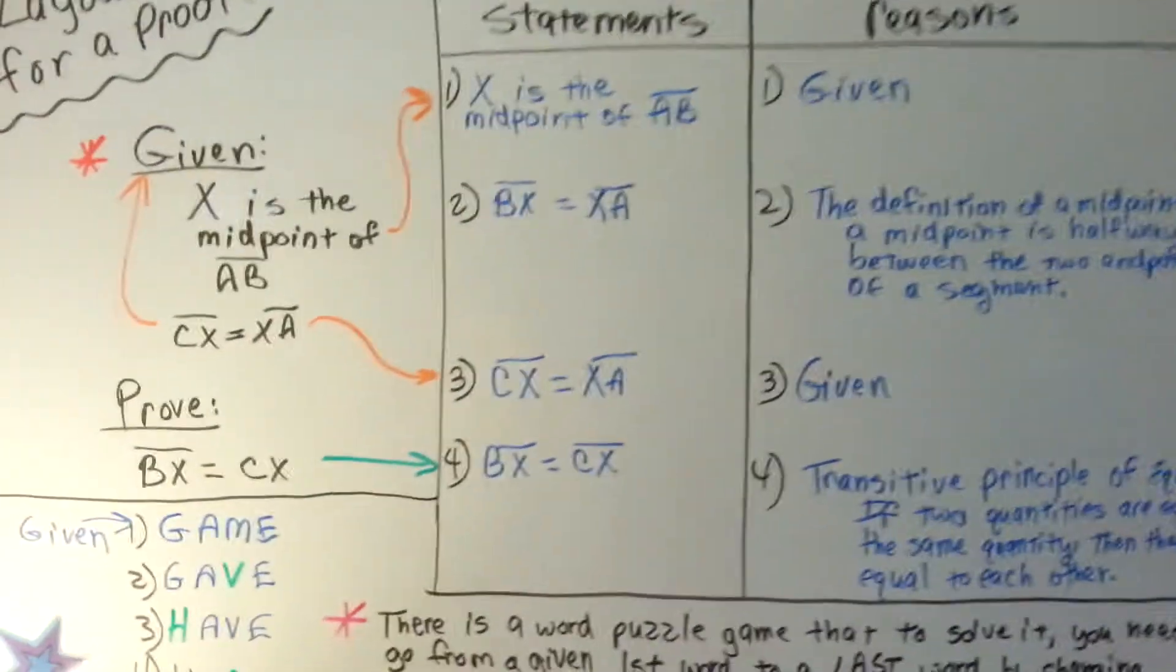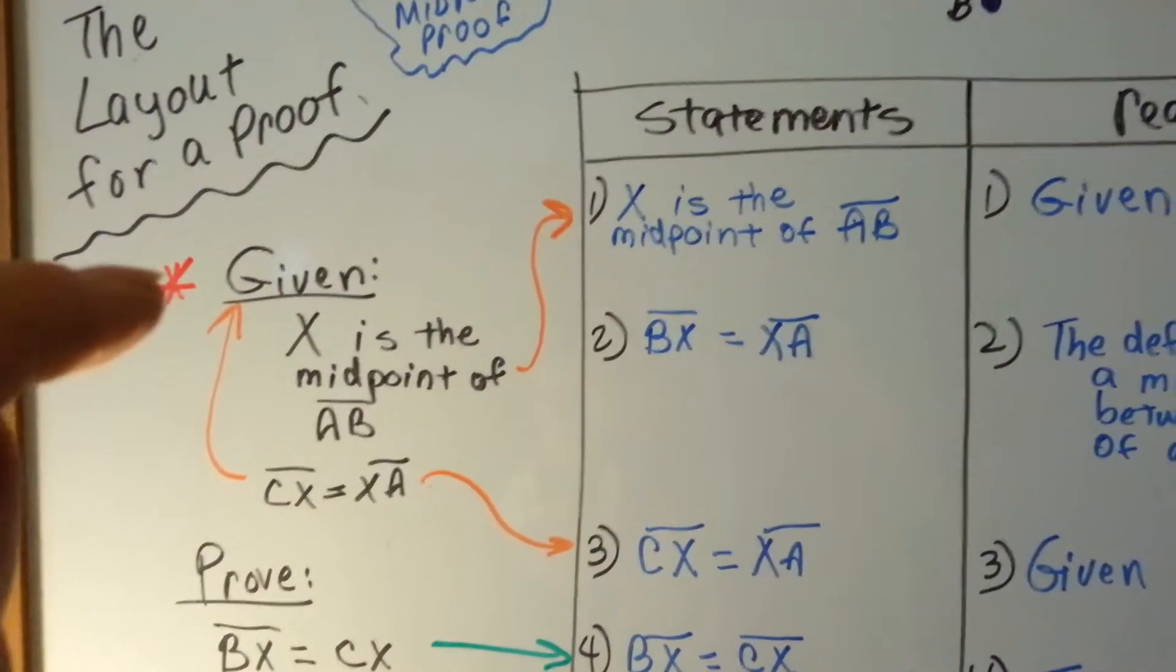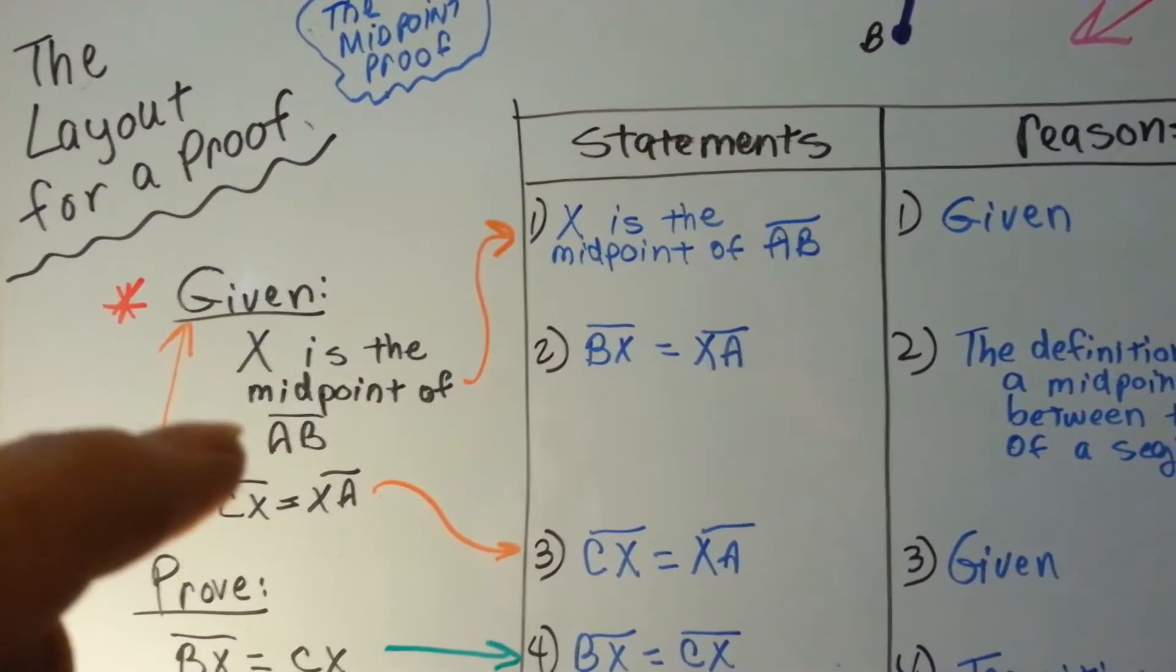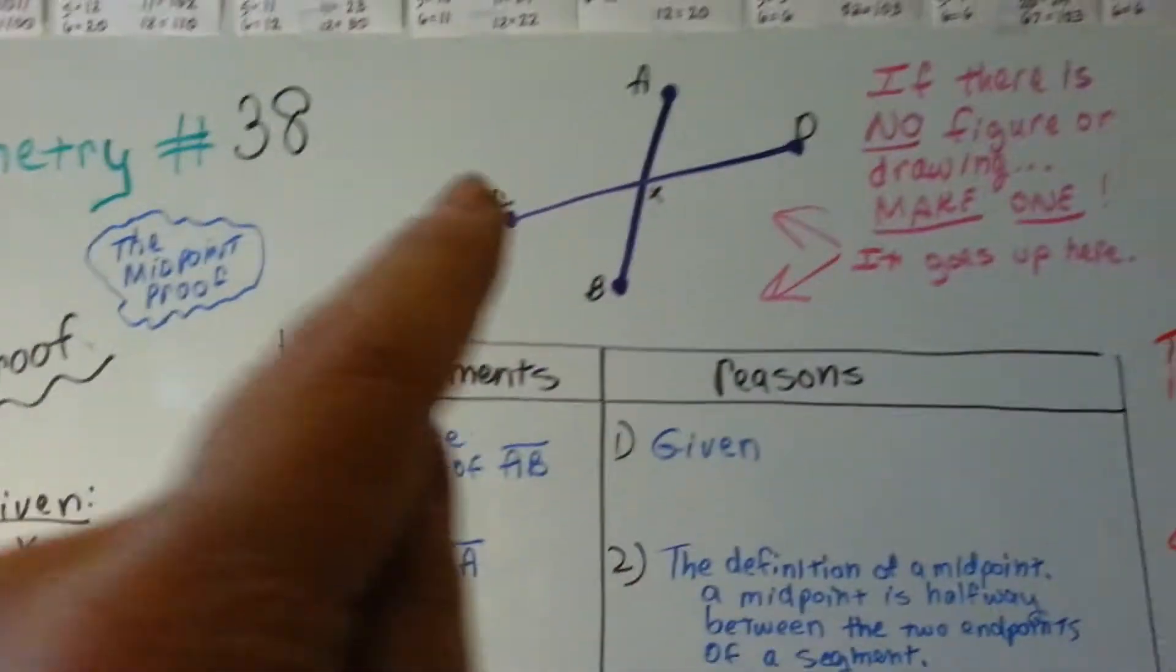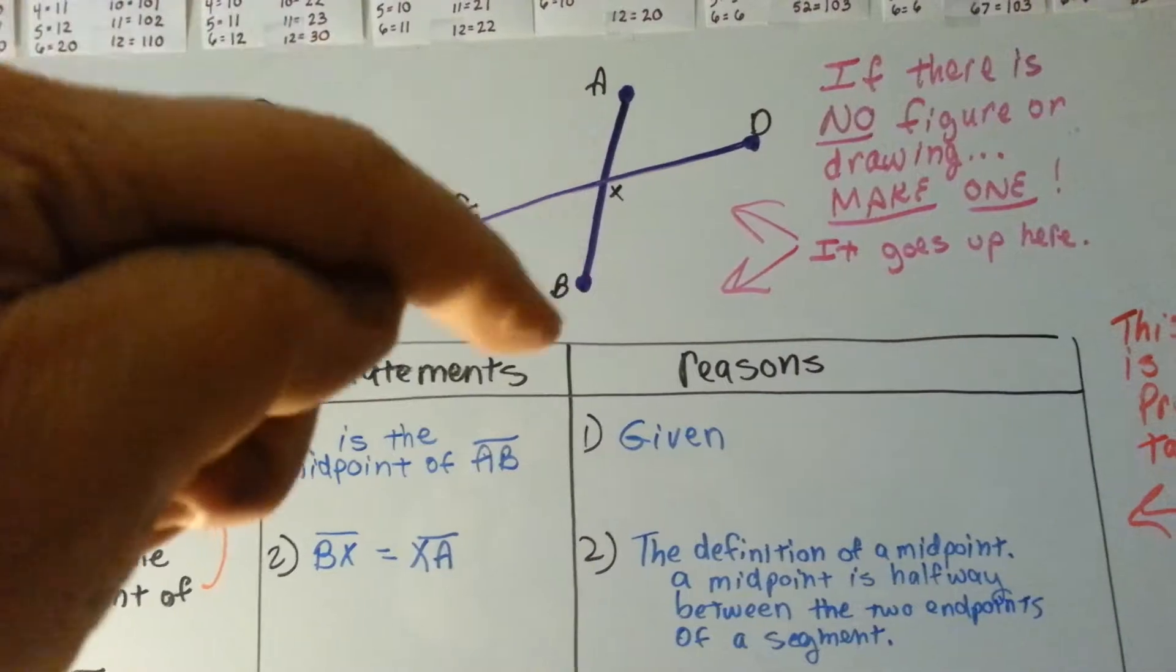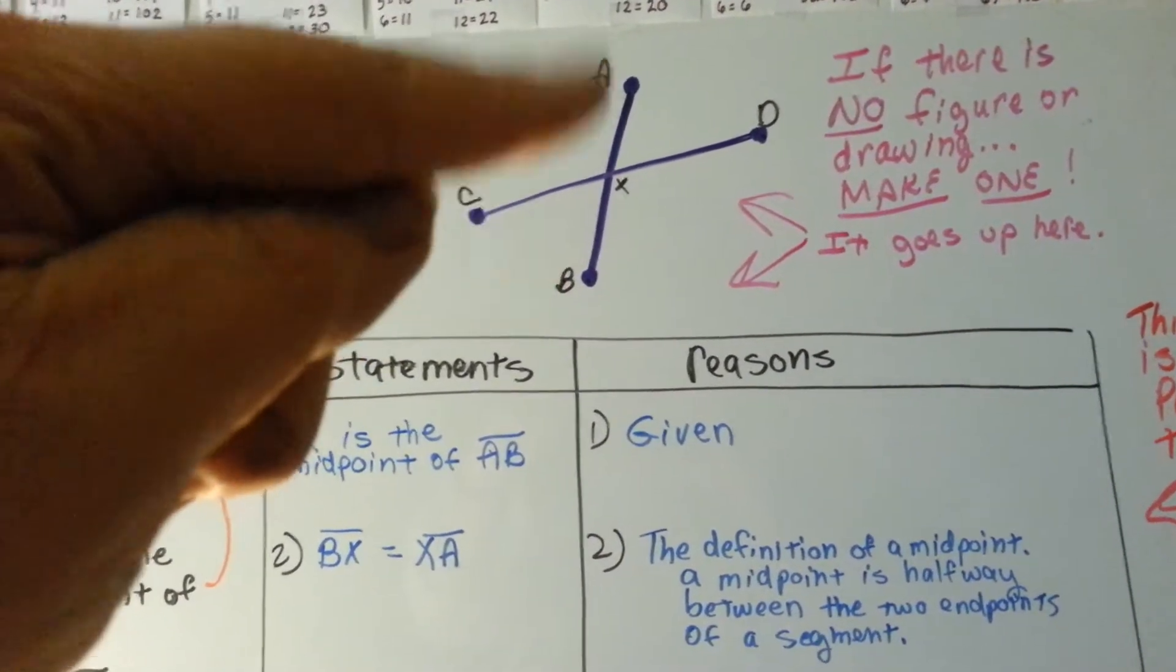So, let's look at our given. It's given that x is the midpoint of AB. x is the midpoint of segment AB. Okay, there's x and it's the midpoint of segment AB.